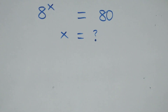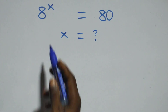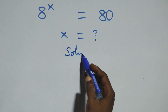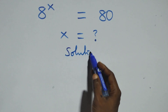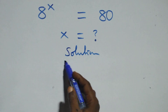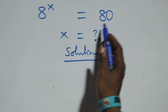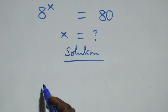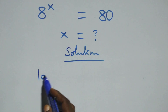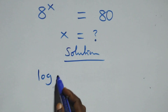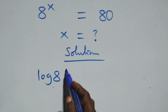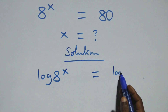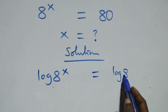Hello, you're welcome. How to solve this nice exponential equation. What we have here is 8 raised to the power x equals 80. We take the log on both sides, giving us log of 8 raised to the power x equals log 80.